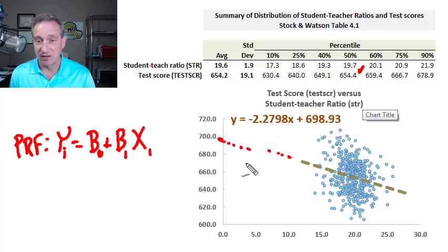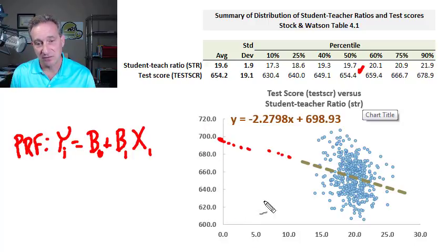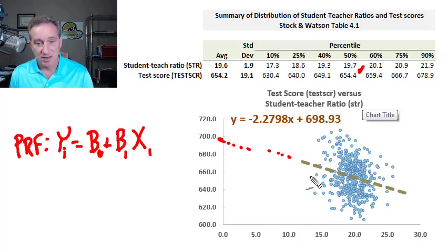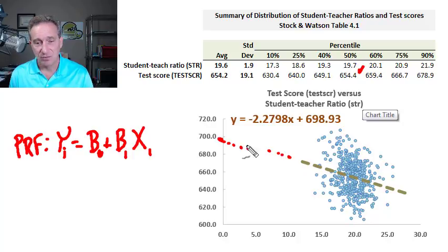We can also say we're regressing the test scores against the student-teacher ratios — this is a regression of test scores on the student-teacher ratio. This is the population, so the idea with the population regression function is that if we have the whole population, we only have one population regression function. In practice, our population is usually unimaginably larger.